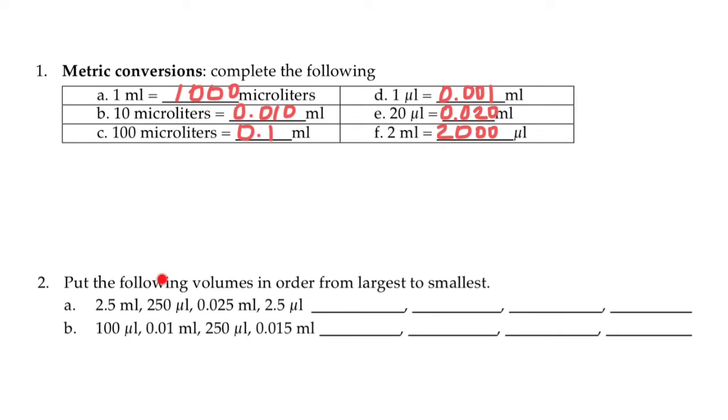And here's the second problem. Put the following volumes in order from largest to smallest. There are two approaches here, whether we can convert all numbers into microliters or into milliliters, so we would be able to compare them. Let's first do conversion to microliters.